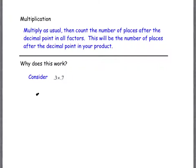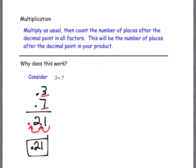This is a straightforward problem: 0.3 times 0.7, so 3 tenths and 7 tenths. What is 3 times 7? That's 21. Following the algorithm, there's one decimal place here and one decimal place here, so I need two decimal places total. Counting over one place, two places — my decimal point goes here, giving 0.21, which is 21 hundredths. But why did I do that counting? Why is the answer 0.21 and not 2.1, which is a common mistake when you just pull the decimal straight down as we do for addition and subtraction?